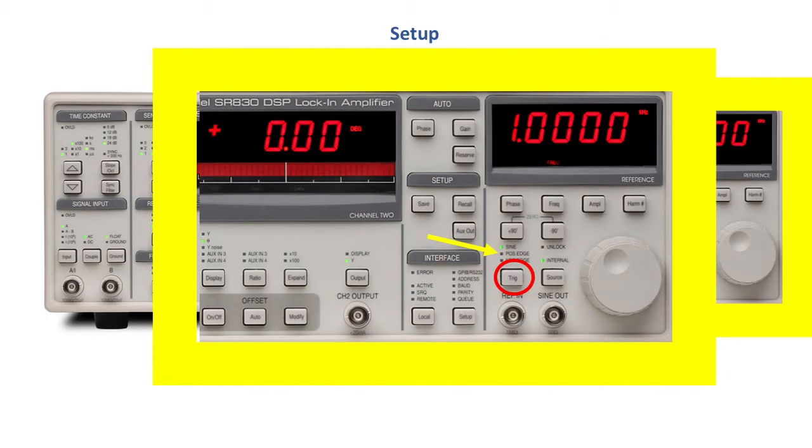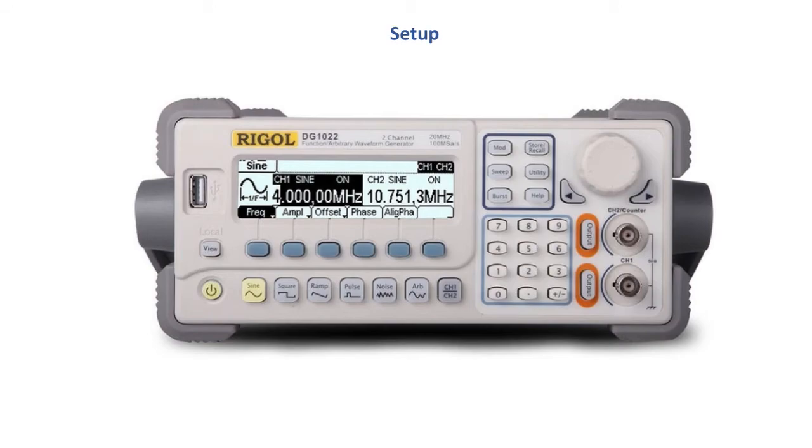There's more readings on why you do this as well that I definitely recommend you look through. Then again on the waveform generator we turn on the output for channel one. We obviously change the frequency and the amplitude to what we see fit.